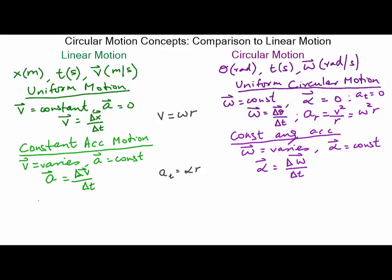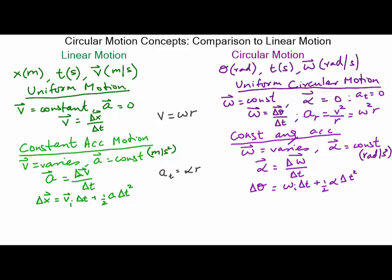Displacement is given by initial velocity times the time duration plus one half times acceleration times the time duration squared. Similarly, angular displacement equals initial angular velocity times the time duration plus one half times angular acceleration times the square of the time duration. In terms of units: acceleration is measured in meters per second squared, angular acceleration in radians per second squared, and both radial and tangential accelerations are measured in meters per second squared.